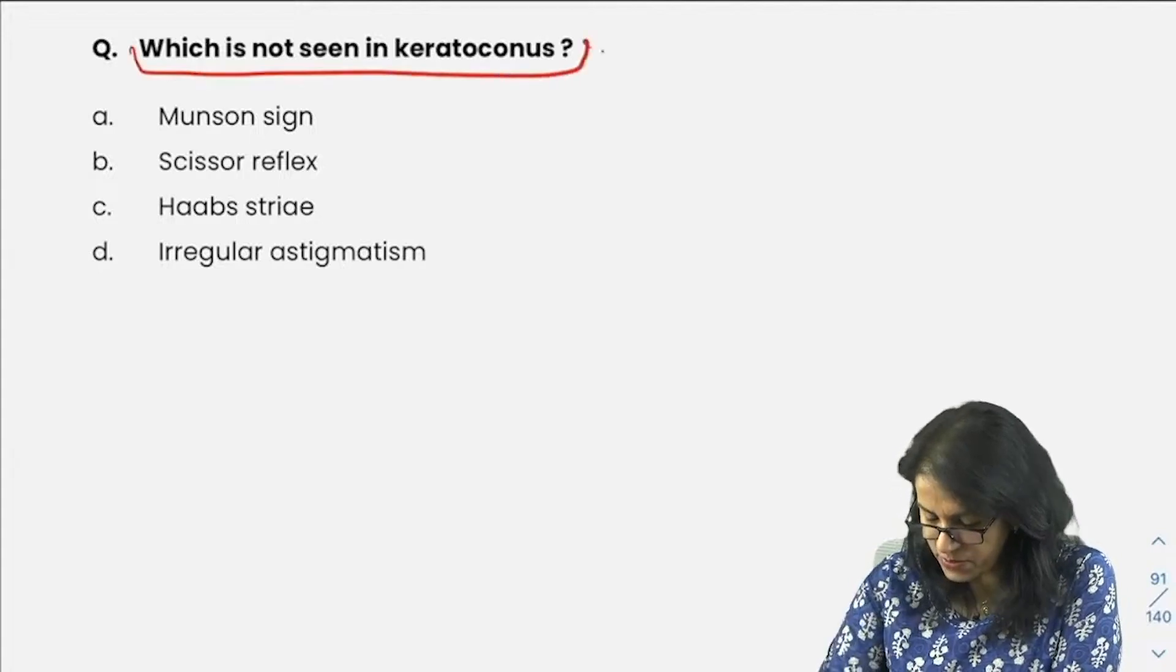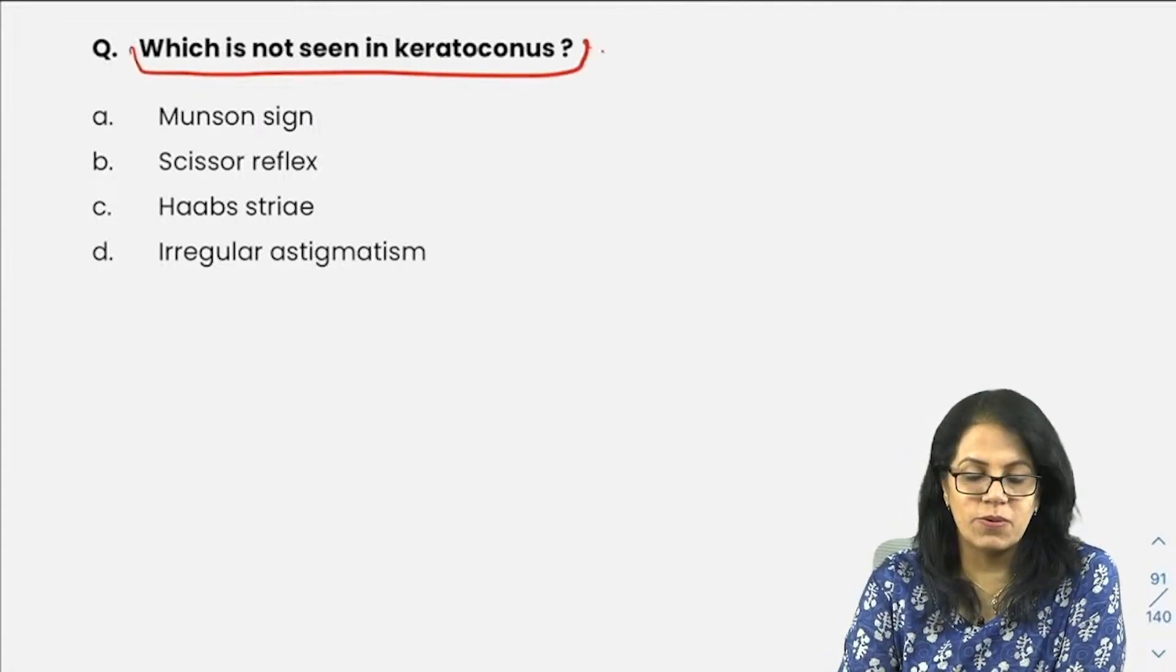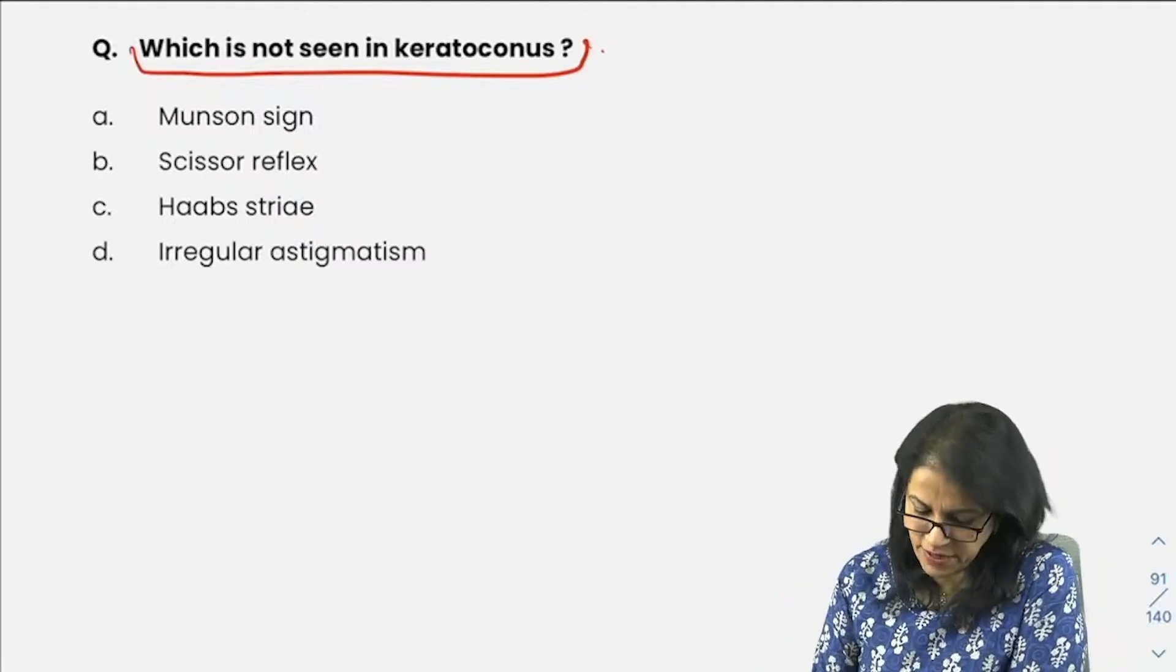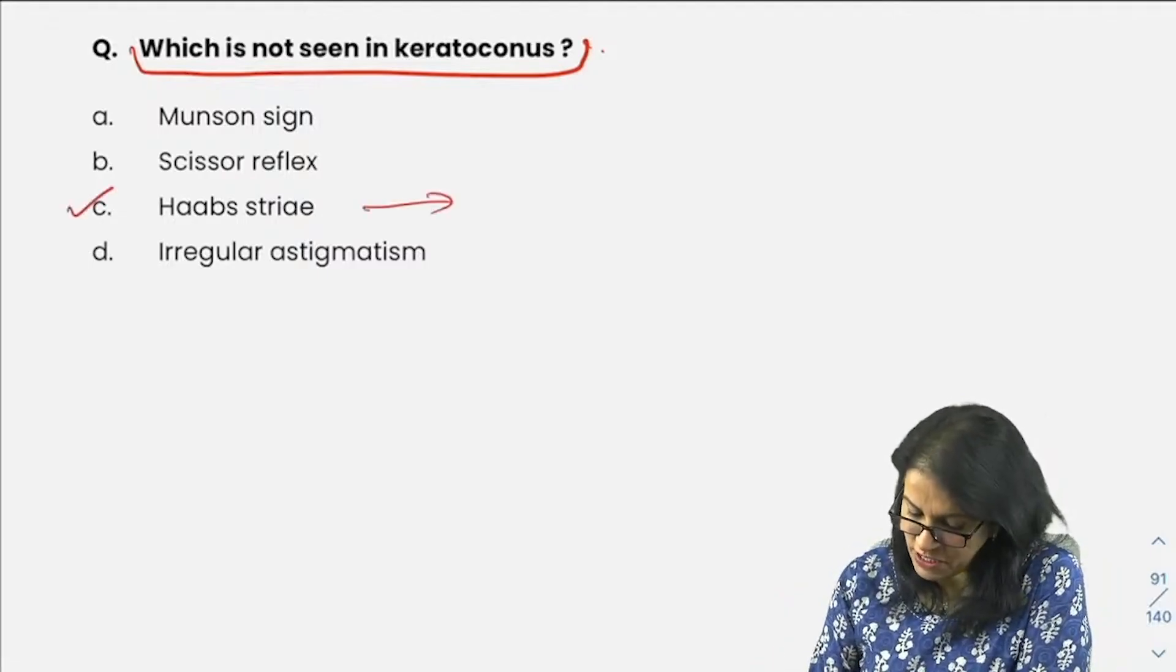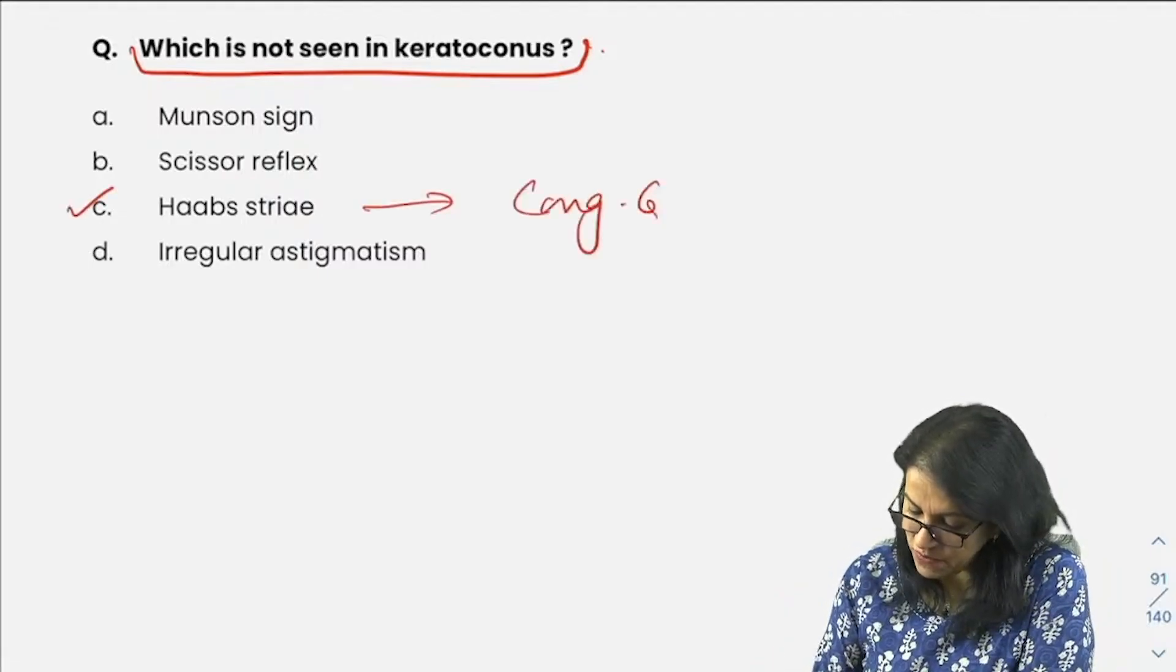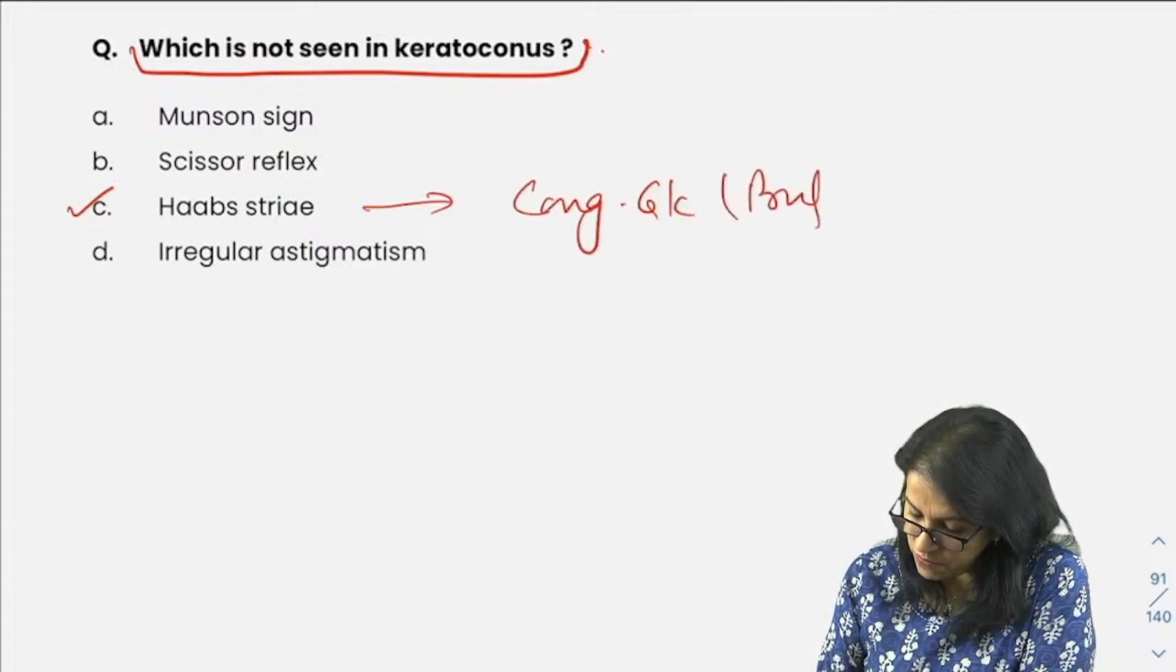Next slide: which is not seen in keratoconus? Answer this question. Yes, very good. Haab's striae is a feature of congenital glaucoma, that is buphthalmos.